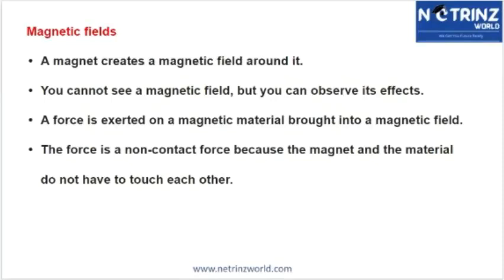The magnetic field is not a visible force, but you can demonstrate whether it is present by observing its different effects. When you place a magnet on a table, you cannot see its magnetic field or magnetic force, but you can observe its effect on different things. To observe the magnetic field, you need to bring something within the area around the magnet.